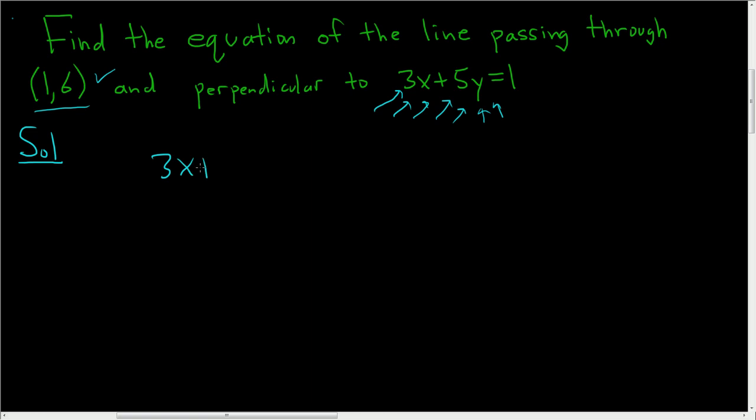So 3x plus 5y equals 1. We'll subtract 3x from both sides. So we end up with 5y equals negative 3x plus 1. Divide everything by 5. So we get y equals negative 3 fifths x plus 1 fifth. So the slope of this line is negative 3 over 5.